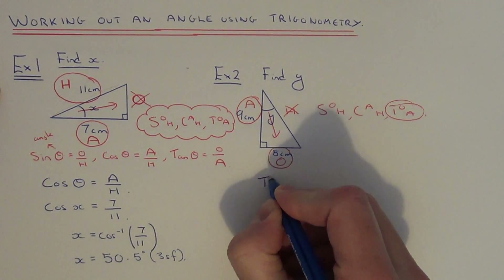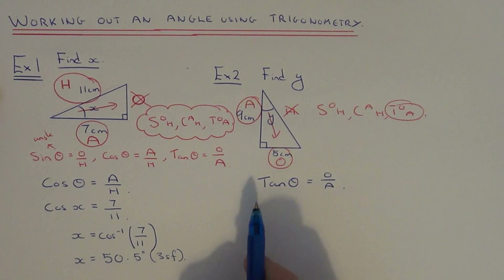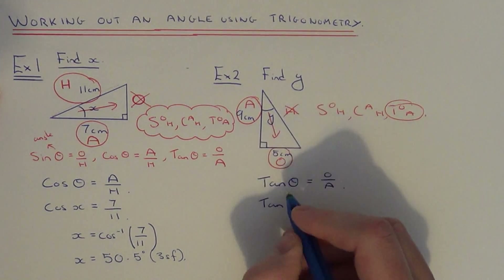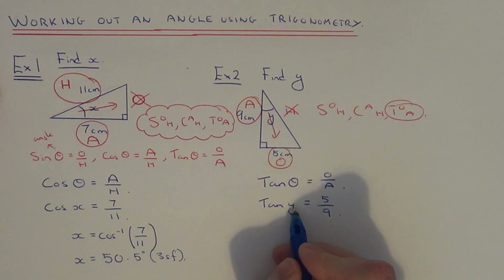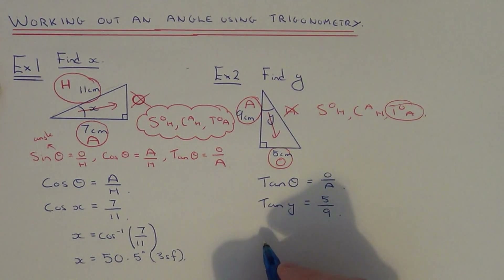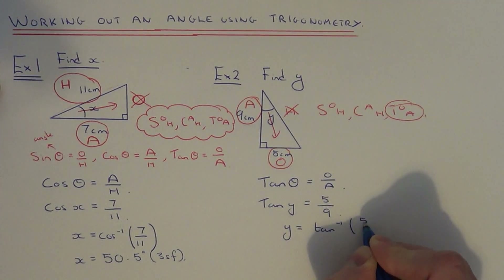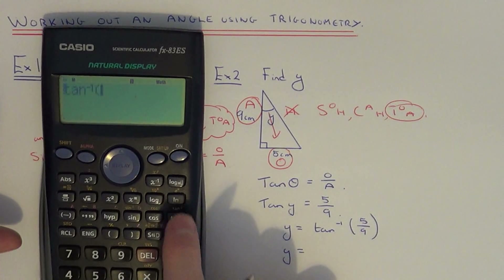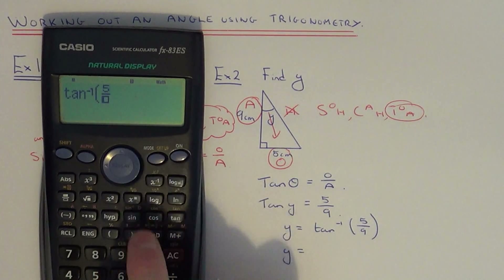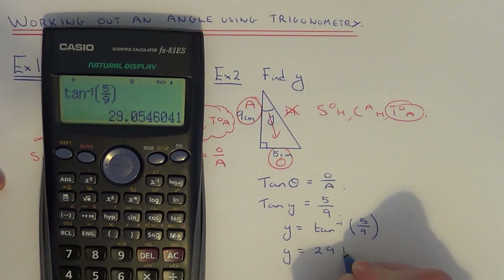Writing the formula down correctly: tan θ equals opposite over adjacent. Substituting values: tan y — y is the angle — the opposite is 5 and the adjacent is 9. To work out the angle I need to do the opposite to tan, which is tan inverse — tan to the power of minus 1 — so I tan inverse the fraction on the right hand side. On your scientific calculator go shift tan, then fraction 5 over 9, and close the bracket. That converts the fraction into an angle, so to three significant figures it's 29.1 degrees.